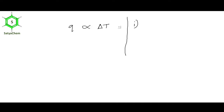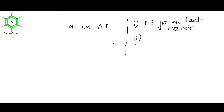This relation is not applicable for a heat reservoir. The second condition is: this holds for a given mass of a particular substance. For example, it will be different for iron compared to copper. It is true only for a particular mass of a substance.